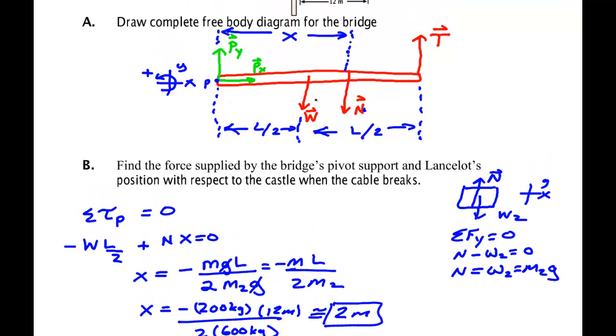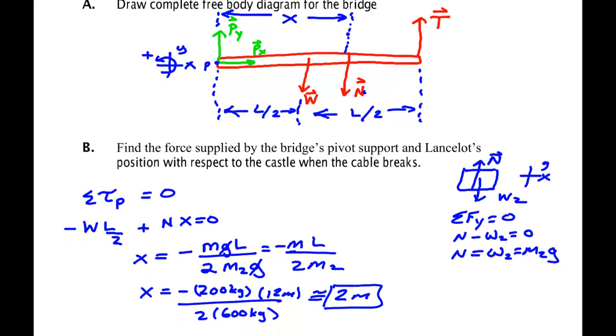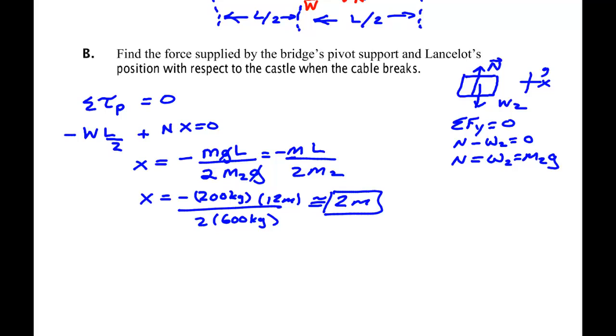Now, I know n. I know w. I can find Py. I can also tell you Px is zero. Sum of the forces in x is zero. There's only one force in the x direction. It's Px. So Px is zero newtons.